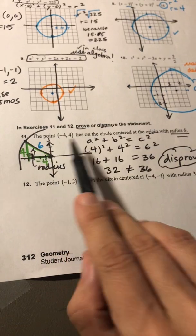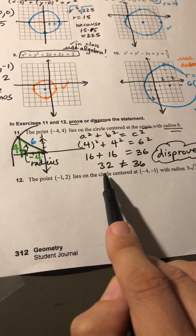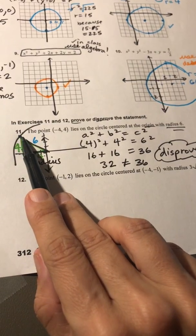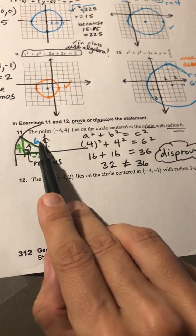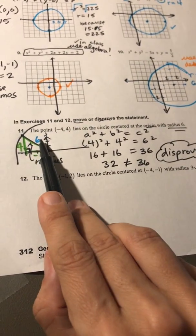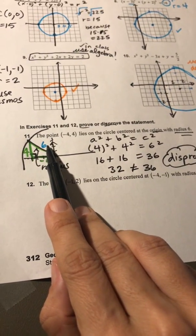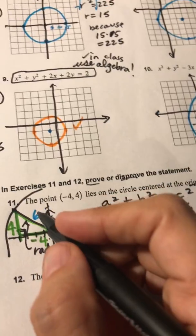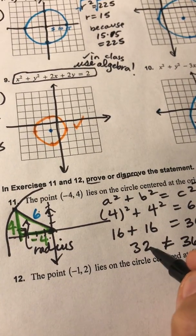Well, I figured out using Pythagorean Theorem that this would be 4 and that would be 4, but the radius would not be 36, or excuse me, 6. The radius would not be 6. In fact, it looks like it would be the square root of 32.